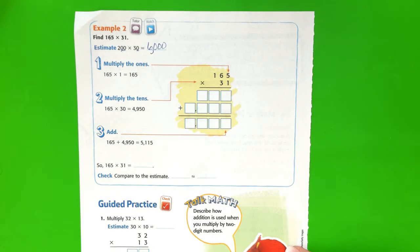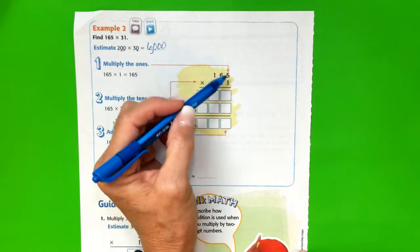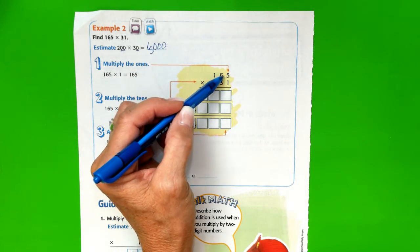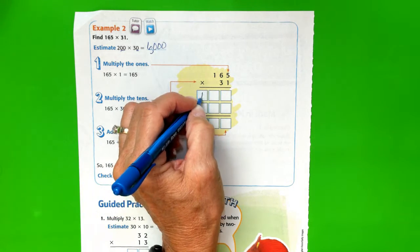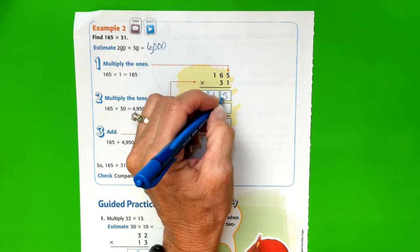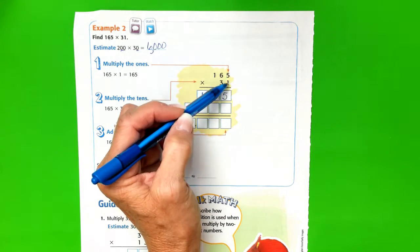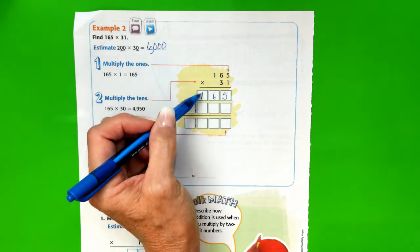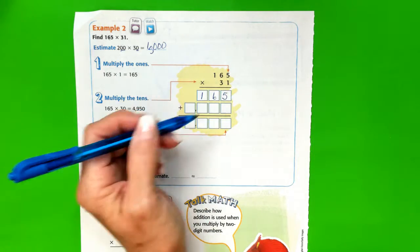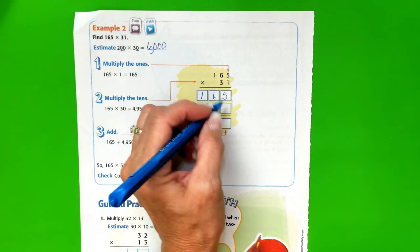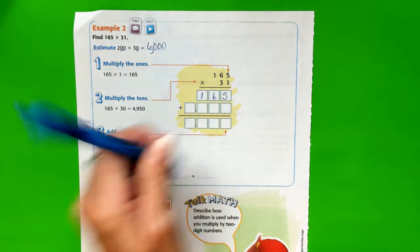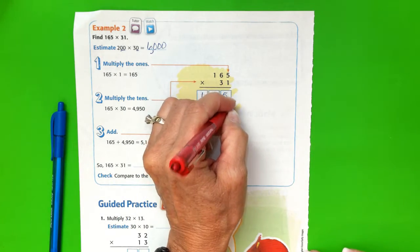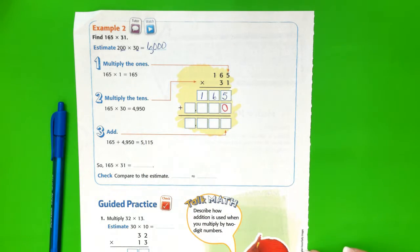Now let's get to multiplying. We're going to multiply the ones. 165 times 1 is 165. We can work backwards as well: 1 times 5 is 5, 1 times 6 is 6, and 1 times 1 is 1. Now we're going to multiply the tens. And of course, we have to put our placeholder here. I'm going to put this in a red pen because this is something everybody always forgets.